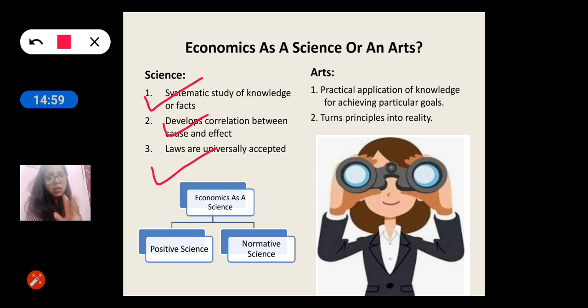Now, economics as a science can further be divided into two parts. Positive science and normative science. Positive science is things as they are, the facts. And normative science is things as they ought to be. I will explain with the help of an example. Say, unemployment. If I say unemployment rate is 5% in India, I am basically talking about positive science. And when I say unemployment rate in India should be reduced, should be reduced, then it is normative science. When I am telling you the fact that unemployment rate in India is 5%, I am talking about positive science. When I am saying that unemployment rate should be reduced, then we are talking about normative science.